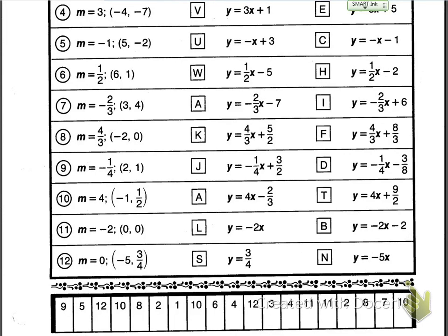All right, so today we're talking about how to find the equation of a line, y equals mx plus b, when given a point and a slope.